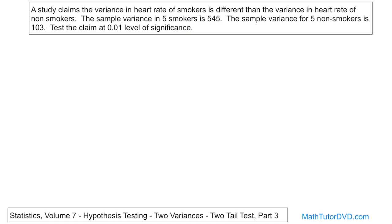First, you need to understand what is going on. You have smokers and non-smokers, and the claim is that the variance in heart rate is different — not necessarily higher or lower, just different. Now, 103 looks a whole lot different than 545, so based on this sample data I'd probably think it's true. But you can't make that claim without doing a full-blown test, because you're doing it at a 99% level of confidence, and that's a pretty high bar to jump over.